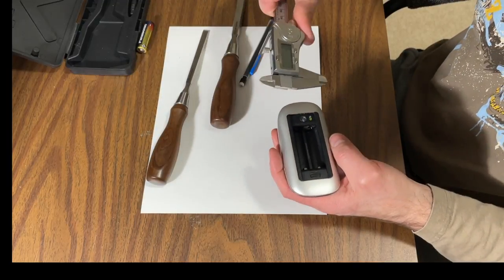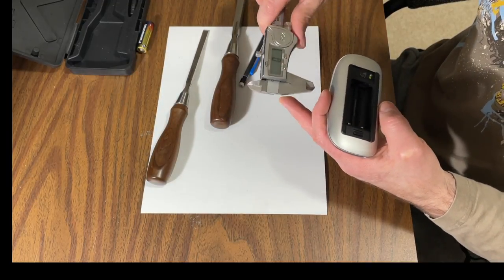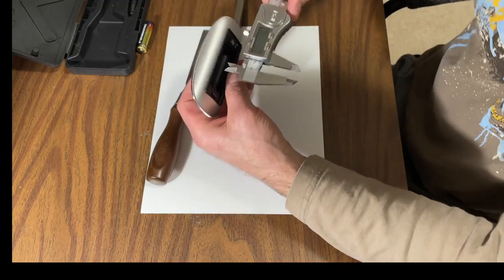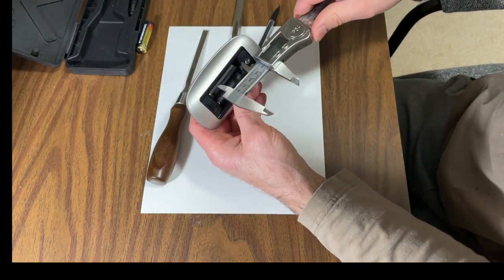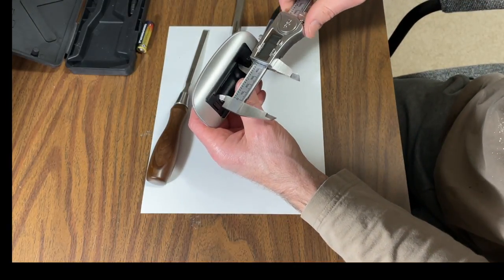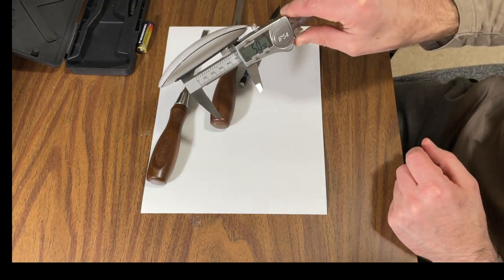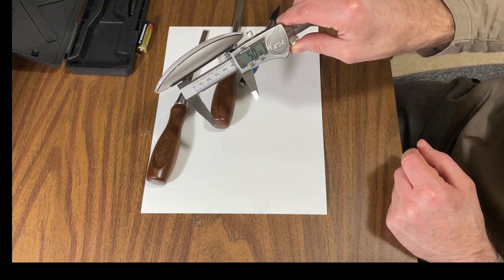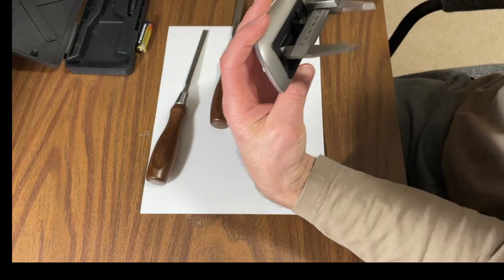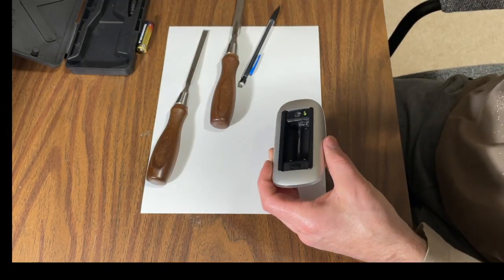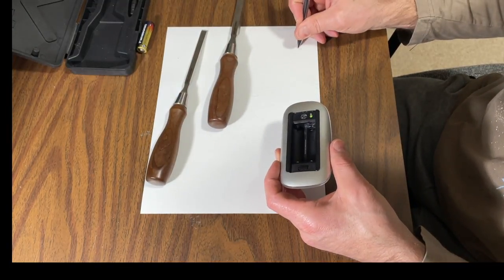So how much am I really taking off? So if I measure the inside measurement here, looks like 50 and a half millimeters is what the overall inside measurement is.